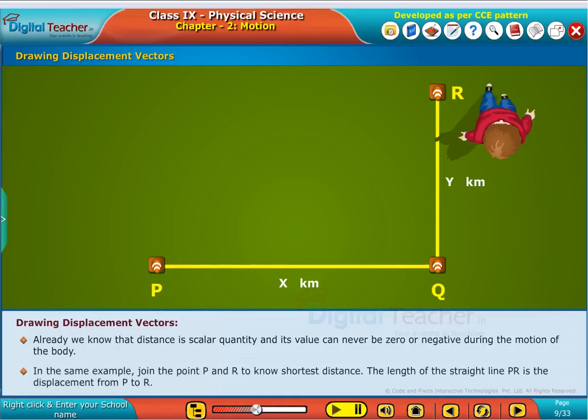In the same example, join the point P and R to know shortest distance. The length of the straight line PR is the displacement from P to R.